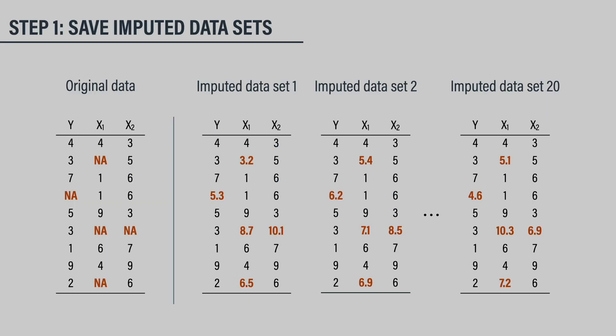The first step is to save a small number of imputed datasets — 20 is often a good rule of thumb. Importantly, each of the filled-in datasets contains different estimates of the missing values because those imputations are based on different parameter estimates. Missing scores are imputed by drawing replacement values at random from a distribution. The center and spread of these distributions are essentially predicted scores and variance estimates from one or more regression models. Conceptually, each imputation can be viewed as a predicted score plus random noise.